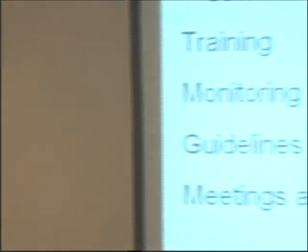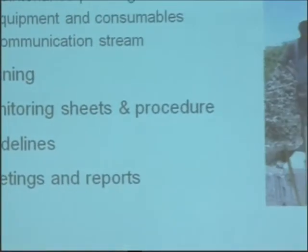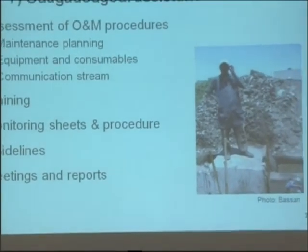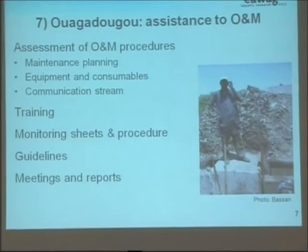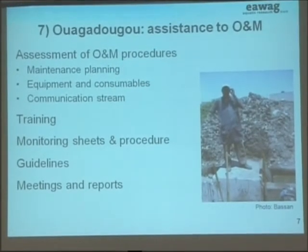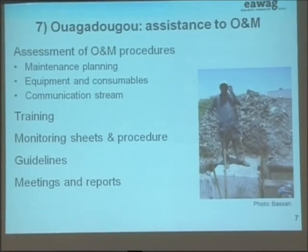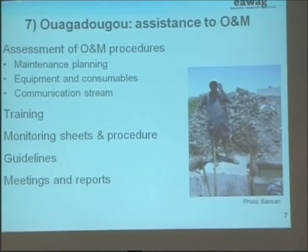There are potential tools to assist O&M for faecal sludge, inspired by a project we currently have with ONEA, the National Office for Water and Sanitation. This was done for wastewater treatment plants but can be adapted for faecal sludge treatment plants. First, it is important to assess present or potential O&M needs: what maintenance is planned, what equipment and consumables are required, how do they work, where can we find them, and how quickly are they available — a very crucial question.